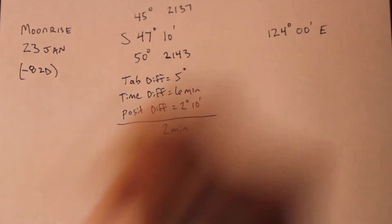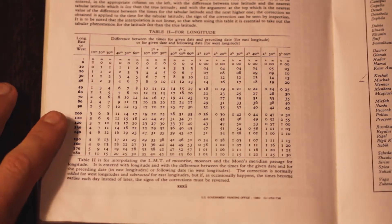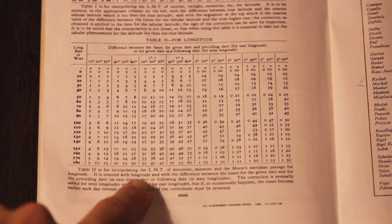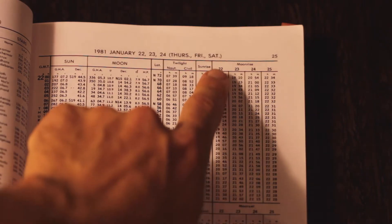While we're in here, let's just refresh on the directions for table 2. In the eastern hemisphere, we need the preceding date, not the following date like we did in the last example. So we need to go back into the daily pages.